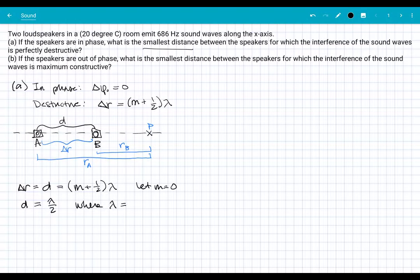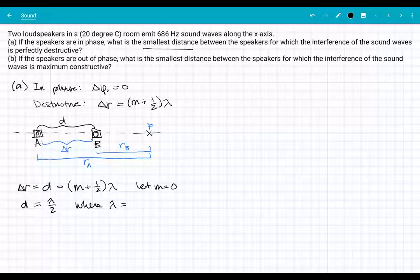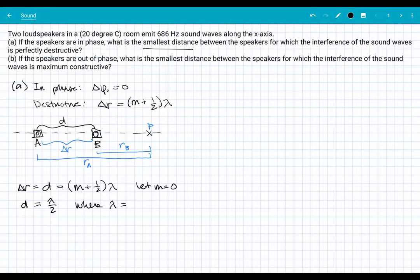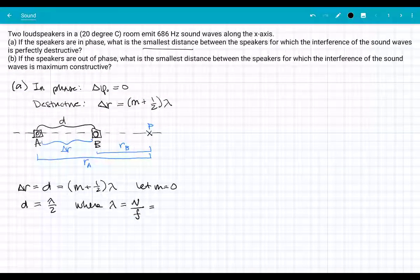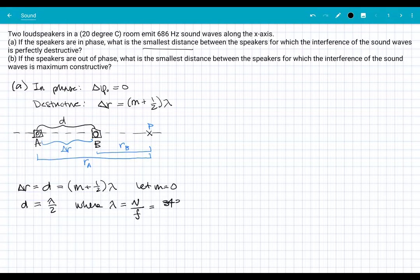I can calculate what lambda is for this particular problem. This will be wave speed over frequency. Speed of sound should be around 343 meters per second at that temperature, and the frequency emitted is 686 hertz. This ends up being around half a meter. That allows us to solve for D as lambda over two, which equals 0.25 meters.